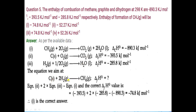In the reactant side, we need carbon and 2 moles of hydrogen. Carbon is present in equation 2 and hydrogen is present in equation 3, but hydrogen is only 1 mole in equation 3 while we need 2 moles. So we will add equation 2 and multiply equation 3 by 2 — because we want 2 moles of hydrogen. When you multiply any chemical equation, you have to multiply the whole equation: reactants, products, and their enthalpy values.